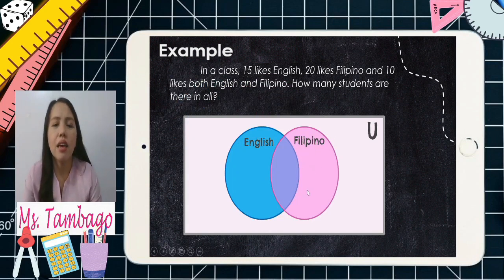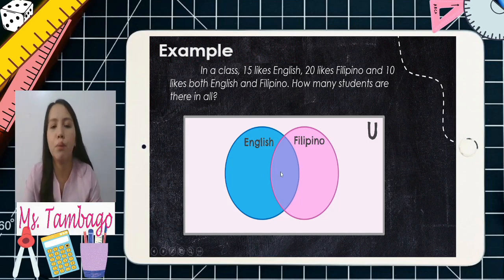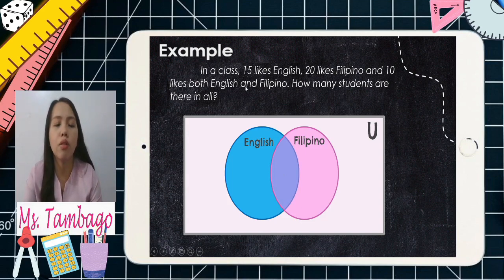Let's always start in the middle — the common or 'both' section. Since we have 10 who like both English and Filipino, we can already write 10 in the middle portion.